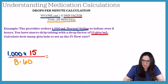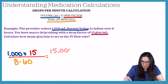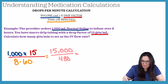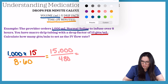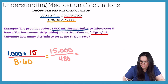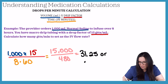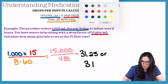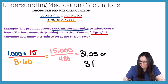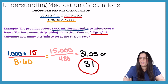Based on our calculations, we get 15,000 over 480. When you finish out the calculation, you get a final answer of 31.25, or 31 drops when you round it.